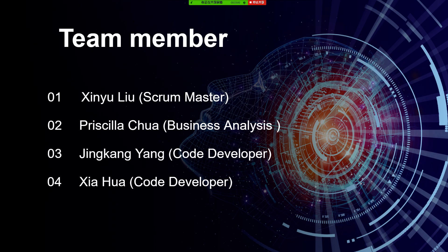I'm Xingyu Liu, the Scrum Master of the team, responsible for team management. I'm Professor Chua and I'm responsible for business and analysis. I'm Jingkyang Yang and I'm one of the code developers. And I'm Xiao, I'm a code developer too.